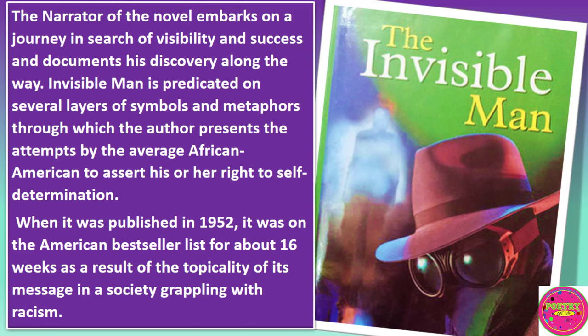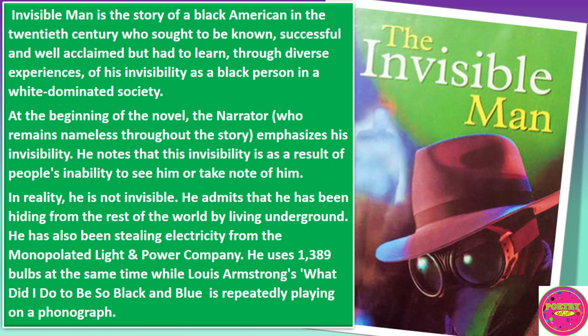Invisible Man is predicated on several layers of symbols and metaphors, through the way the author presents the attempts by an average African American to assert his or her rights to self-determination. When it was published in 1952, it was on the American bestseller list for about 16 weeks, as a result of the topicality of its message in a society grappling with racism. Invisible Man is the story of a black American in the 20th century who sought to be known, successful, and well acclaimed, but had to learn through diverse experiences of his invisibility as a black person in a white dominated society.